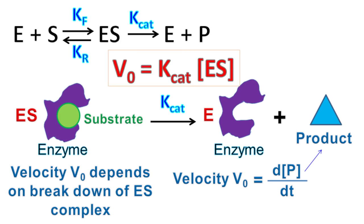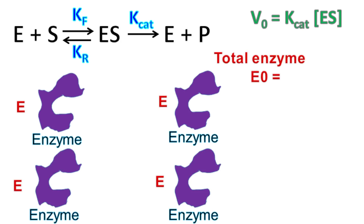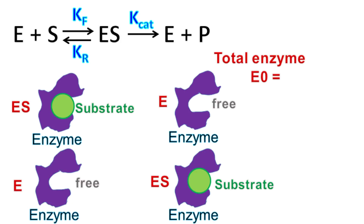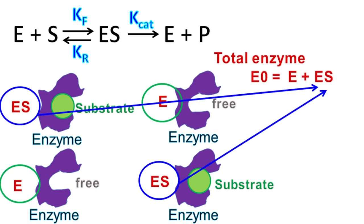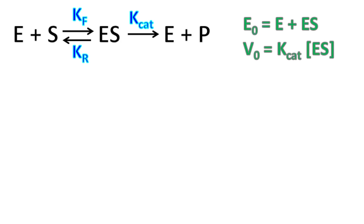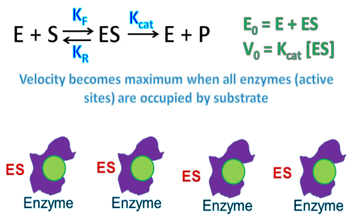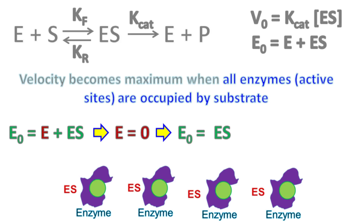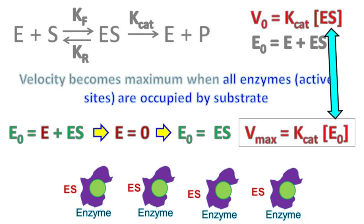When all enzyme molecules are bound with the substrate, there is no free enzyme left. Hence, E0 = ES. As all enzyme sites are occupied by the substrate, the velocity reaches maximum velocity, or Vmax. Therefore, Vmax = Kcat·E0, where E0 = ES.